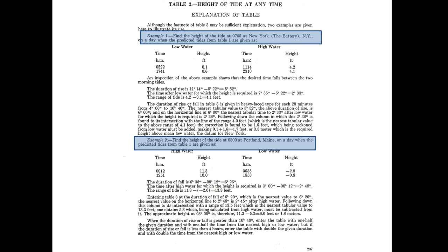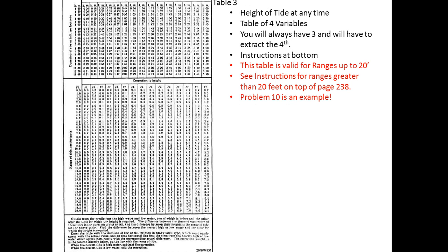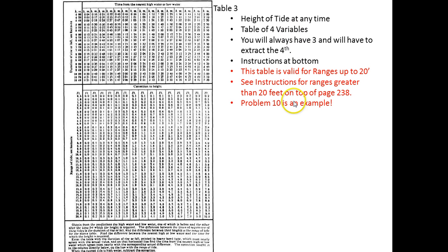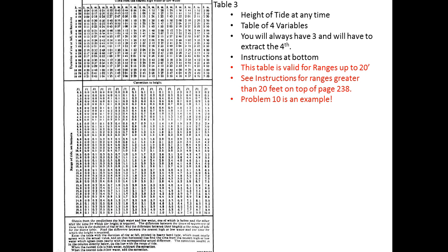When you're trying to calculate what the height of the tide will be at a certain time, you're going to come to table three, which is on page 237 of the book. Right at the beginning there are two examples, so if you get jammed up you can always refer to those. Table three gives you the height of tide at any time — it's a table with four variables: range, duration, time from nearest high or low water, and correction to height. Whenever you're using this table, you're going to have three of these and you're going to extract the fourth. The instructions for how to use this table are right at the bottom.